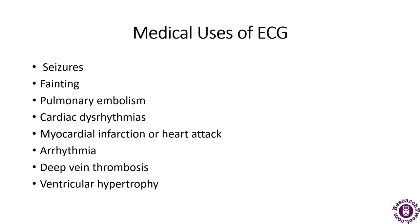The medical uses of ECG include obtaining information regarding heart impulses, finding evidence of past heart attacks, or detecting any antagonist heart diseases. Specific medical uses include seizures, fainting, pulmonary embolism, cardiac dysrhythmia, myocardial infarction or heart attack, arrhythmia, deep vein thrombosis, and ventricular hypertrophy.